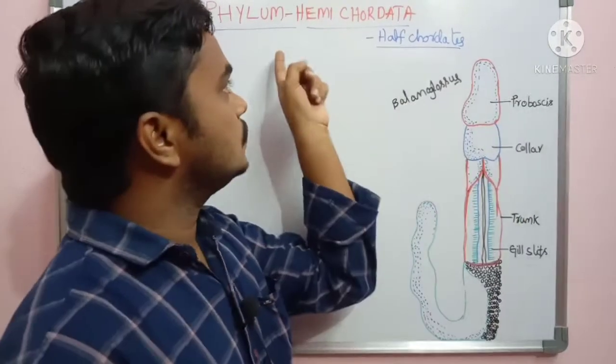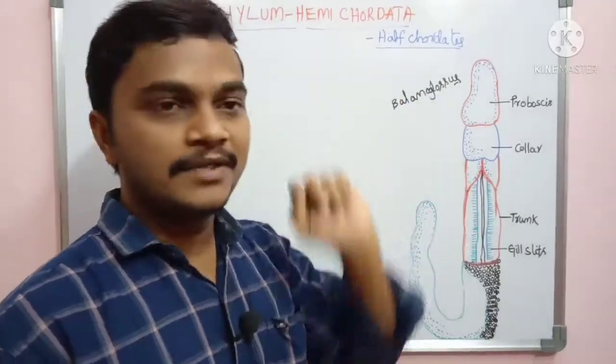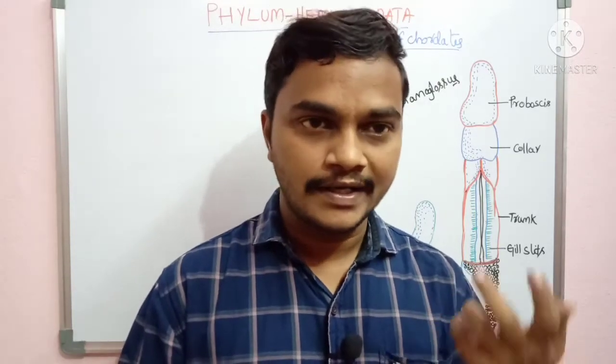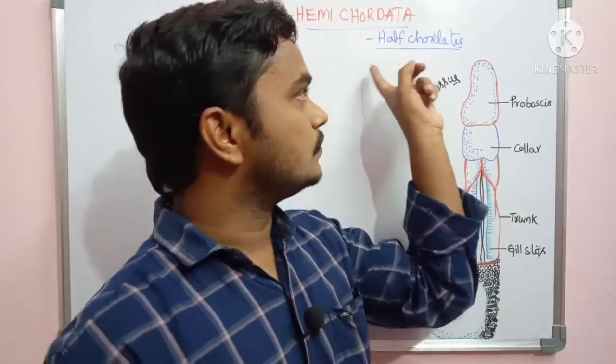Hi students, welcome to our channel. In this video I am going to talk about Hemichordata, also called as half chordates. Initially, phylum Hemichordata was included in the chordates, but later they realized that it is an inverted form, so that's why it is categorized into a special phylum. Hemi means half, chordates means with a notochord.